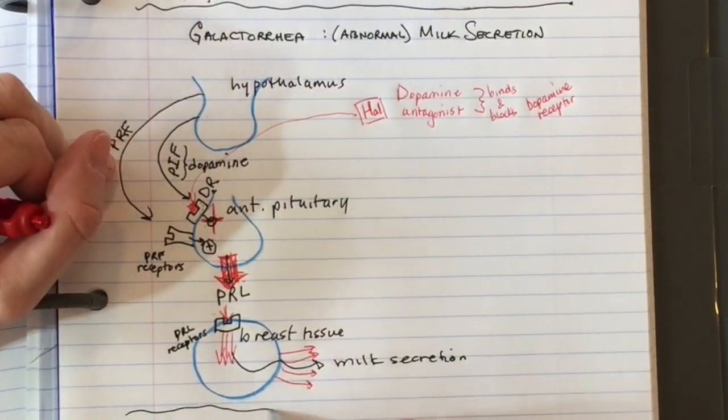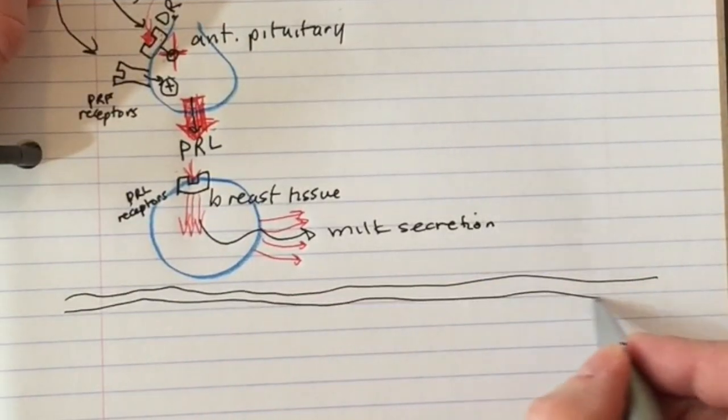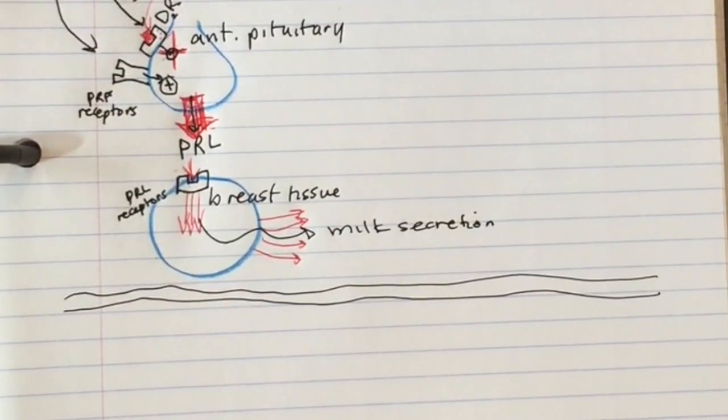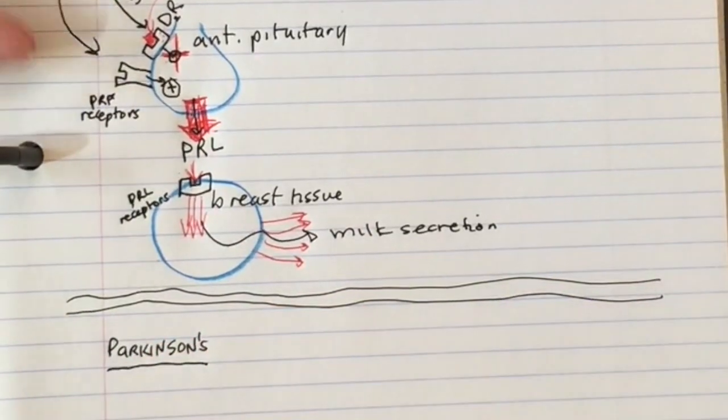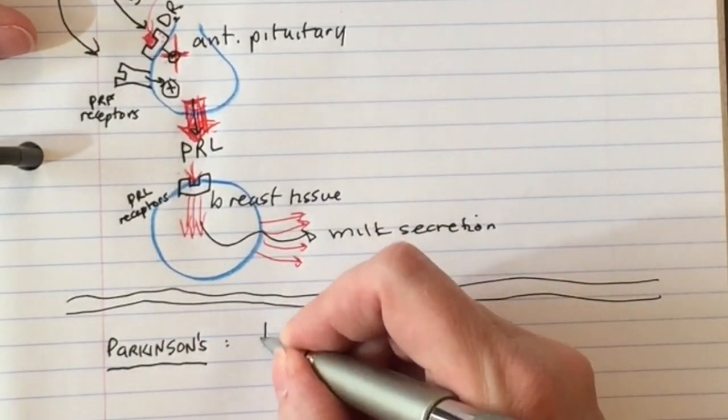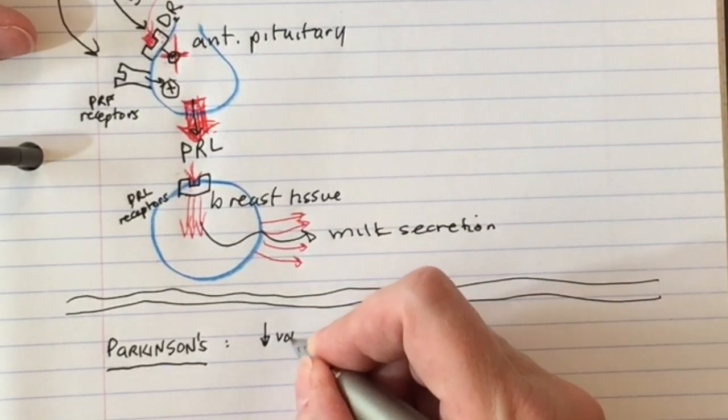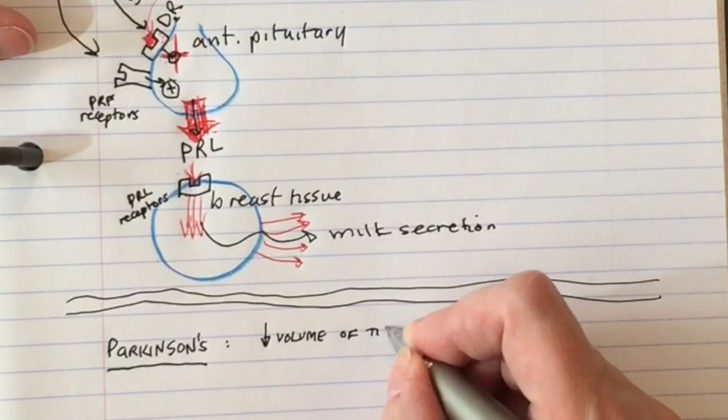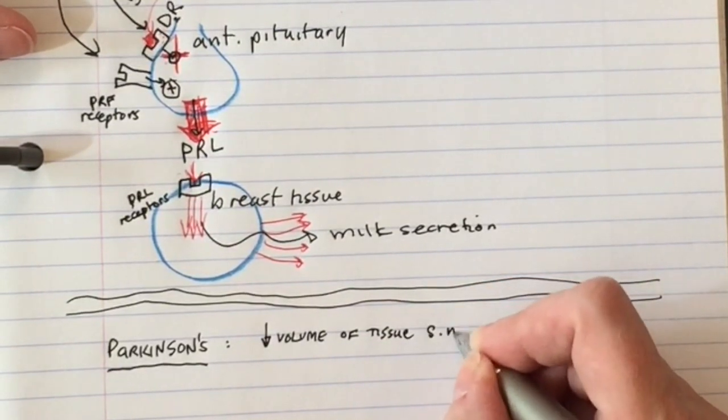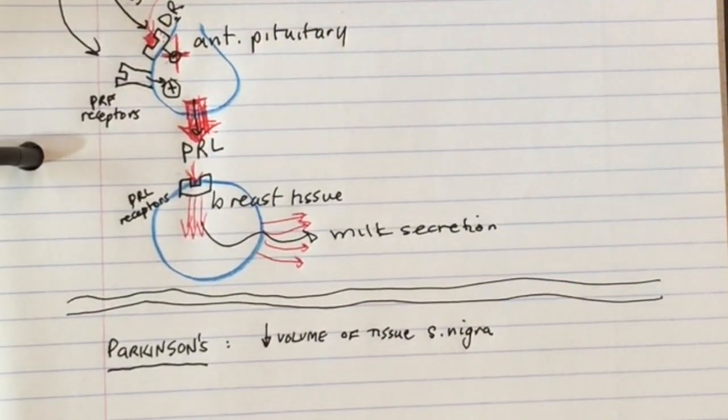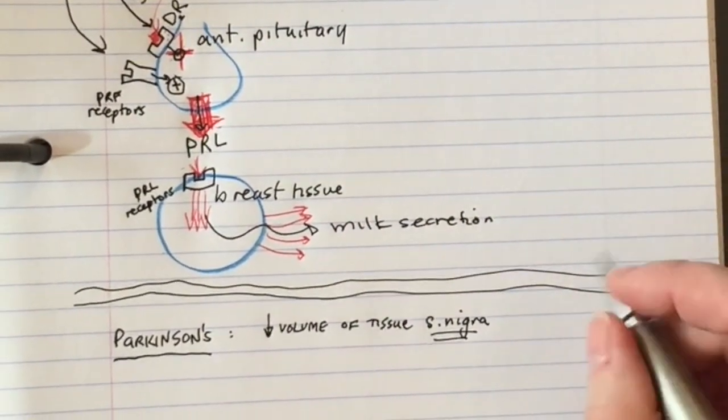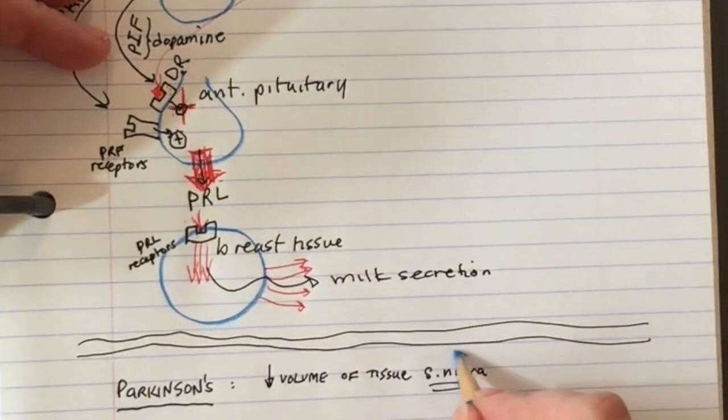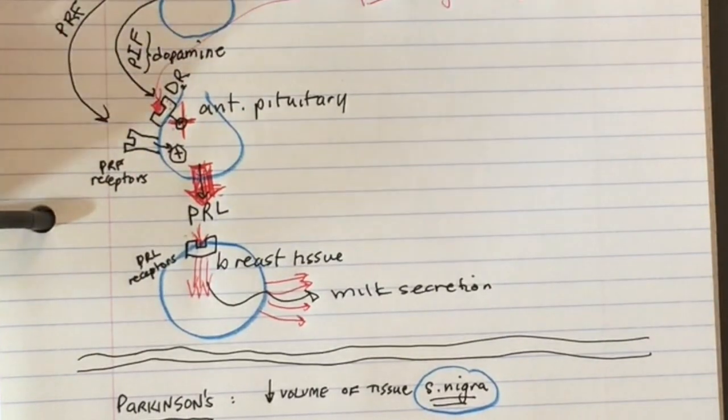Do Parkinson's patients have galactorrhea when they first present? The answer is no. With Parkinson's disease, in a patient newly diagnosed with no drugs on board, the problem is involution of the volume or density of tissue in the substantia nigra. That portion of the central nervous system is responsible for normally producing dopamine.